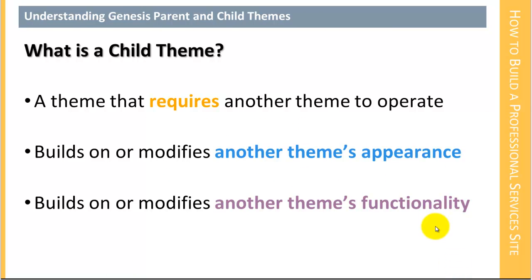When we talk about child themes, it's important to understand the relationship between the parent and the child theme. WordPress looks first to the child theme and gets whatever settings and information it needs in order to render the page. Anything left over that it doesn't get from the child theme, it gets from the parent theme.